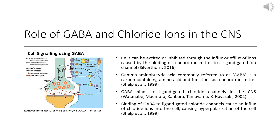Gamma-aminobutyric acid, commonly referred to as GABA, is a carbon-containing amino acid and functions as a neurotransmitter much like acetylcholine. Much like acetylcholine's role in excitation of skeletal muscle, GABA binds to ligand-gated ion channels in the central nervous system, but rather than binding to nicotinic receptors, GABA binds to ligand-gated chloride channels.